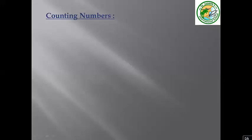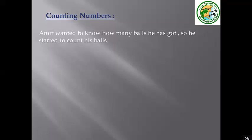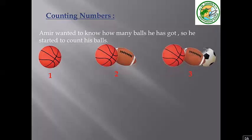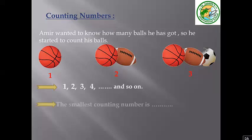Counting numbers — what's the meaning of counting numbers? Amir wanted to know how many poles he has got, so he started to count his poles: one, two, three. Counting numbers come from the word 'count.' I start counting numbers from number one, two, three, four, and so on. The smallest counting number is one, and they continue without ending.